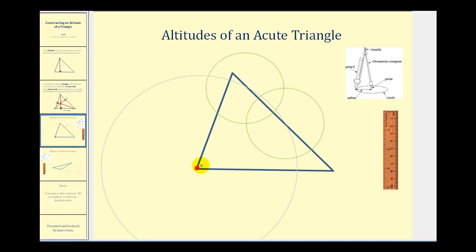The first step is to put the point of the compass on this vertex and open it far enough so that when we swing an arc it will intersect the opposite side in two points. You can extend this side of the triangle if needed. When we swing an arc, notice how it intersects the opposite side in two points — one point of intersection here and another point of intersection here.